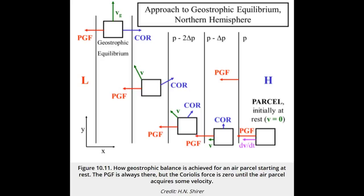Let's see how an air parcel initially at rest achieves geostrophic balance. At rest, the air parcel velocity equals zero, and the only horizontal force acting on the parcel is the pressure gradient force, which has a constant magnitude and direction as long as the pressure gradient remains the same.